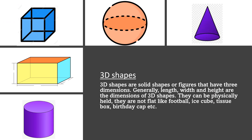Now we are going to start with 3D shapes. 3D shapes are basically the solid shapes or figures that have three dimensions — generally length, width, and height. They can be physically held. They are not flat, like a football, ice cube, tissue box, bottle cap, etc.